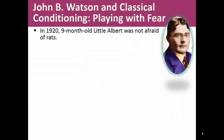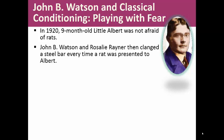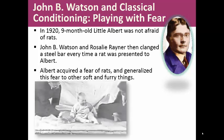John Watson was one of the key figures in behaviorism. In 1920, nine-month-old little Albert was not afraid of rats. John Watson and Rosalie Brainer then clanged a steel bar every time a rat was presented to little Albert, and therefore Albert acquired a fear of rats and generalized this fear to other soft and furry things. By pairing a very aversive noise with the rat, it made little Albert afraid — he didn't like the noise, and when the noise was paired with the rat, seeing the rat made him feel scared, and then anything that was soft and furry became aversive to him.